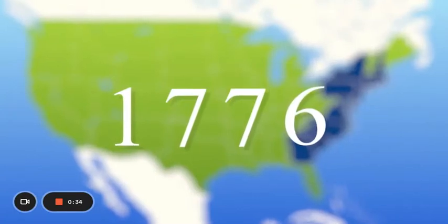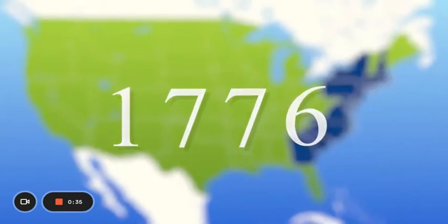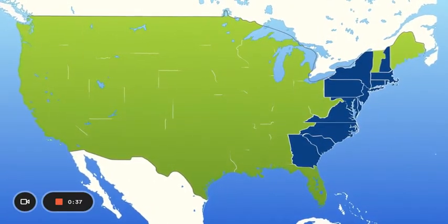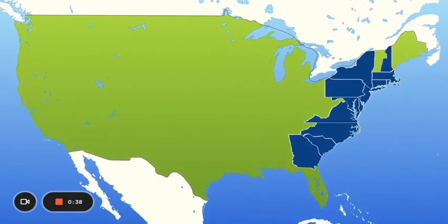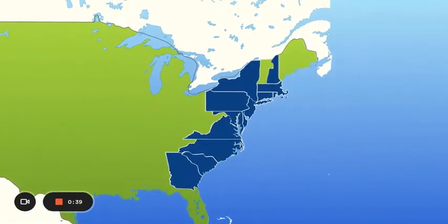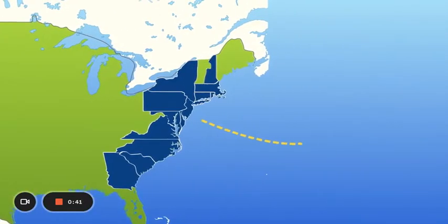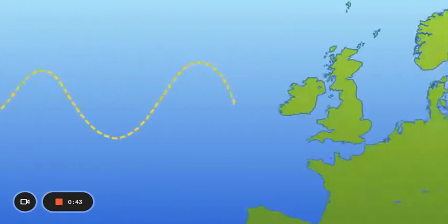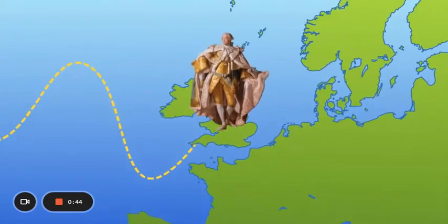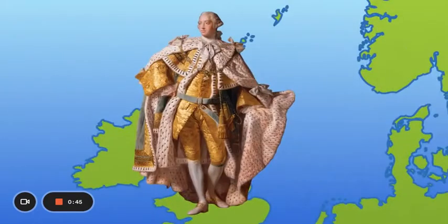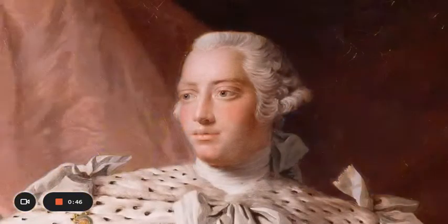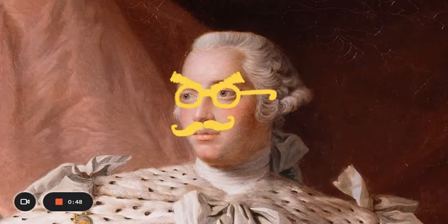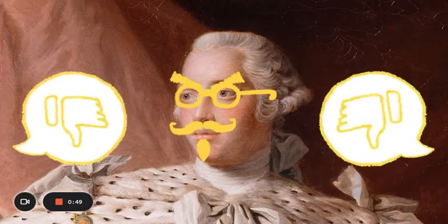Way back in the late 1700s, there was no United States of America — just 13 colonies that were part of Great Britain, a country across the ocean ruled by a king. People in the colonies thought the king's rules were unfair and did not want to follow them anymore.